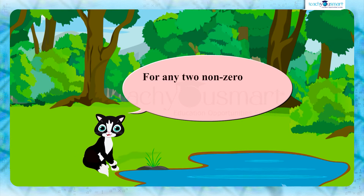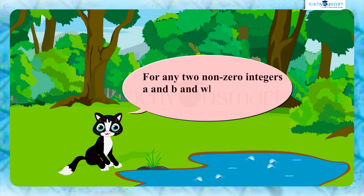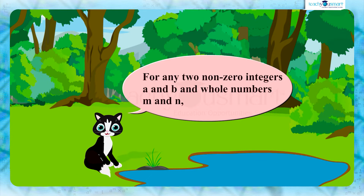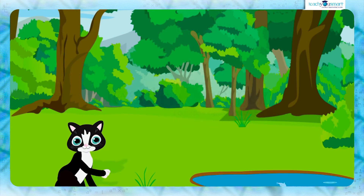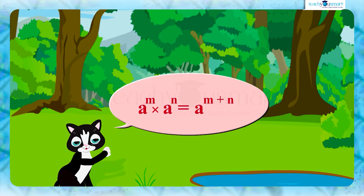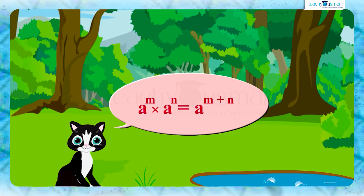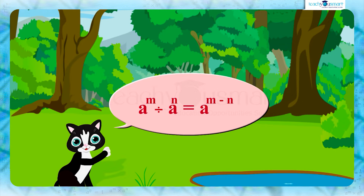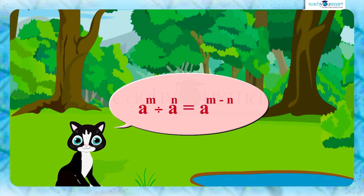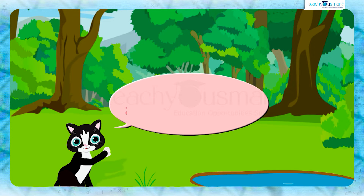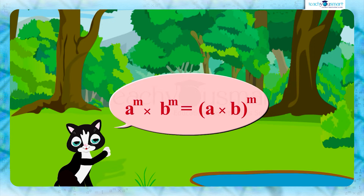For any two non-zero integers a and b, and whole numbers m and n: a raised to m multiplied by a raised to n equals a raised to m plus n. a raised to m divided by a raised to n equals a raised to m minus n. a raised to m multiplied by b raised to m equals a multiplied by b, whole raised to m.